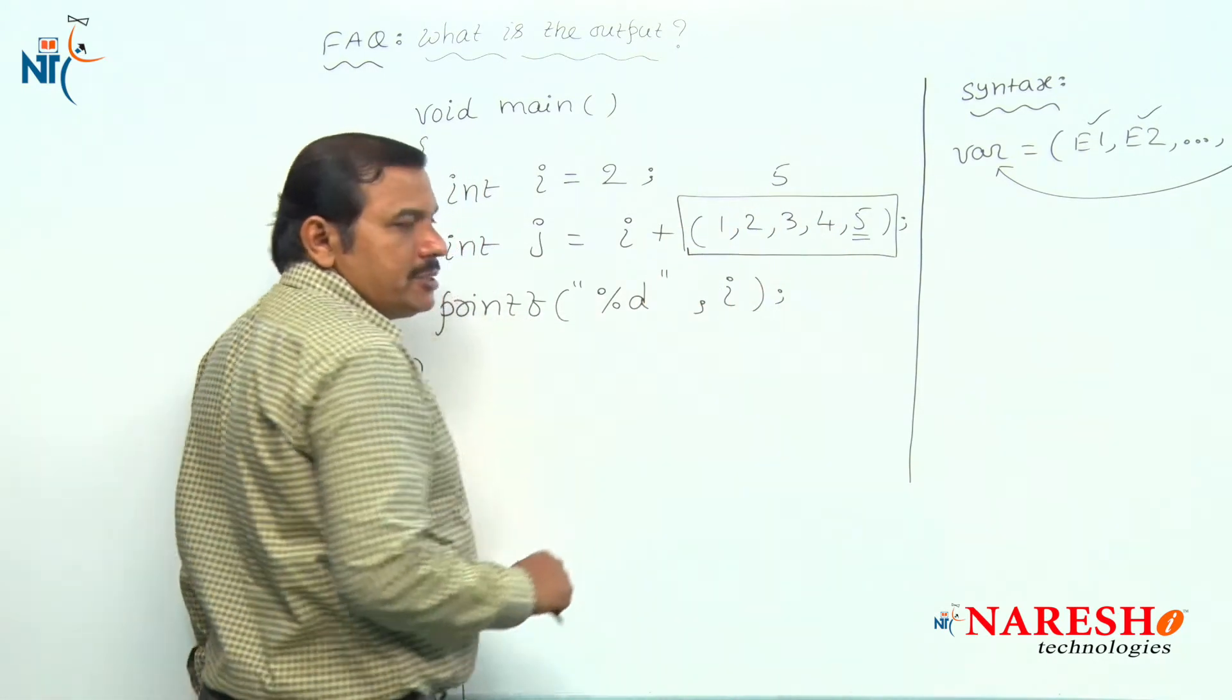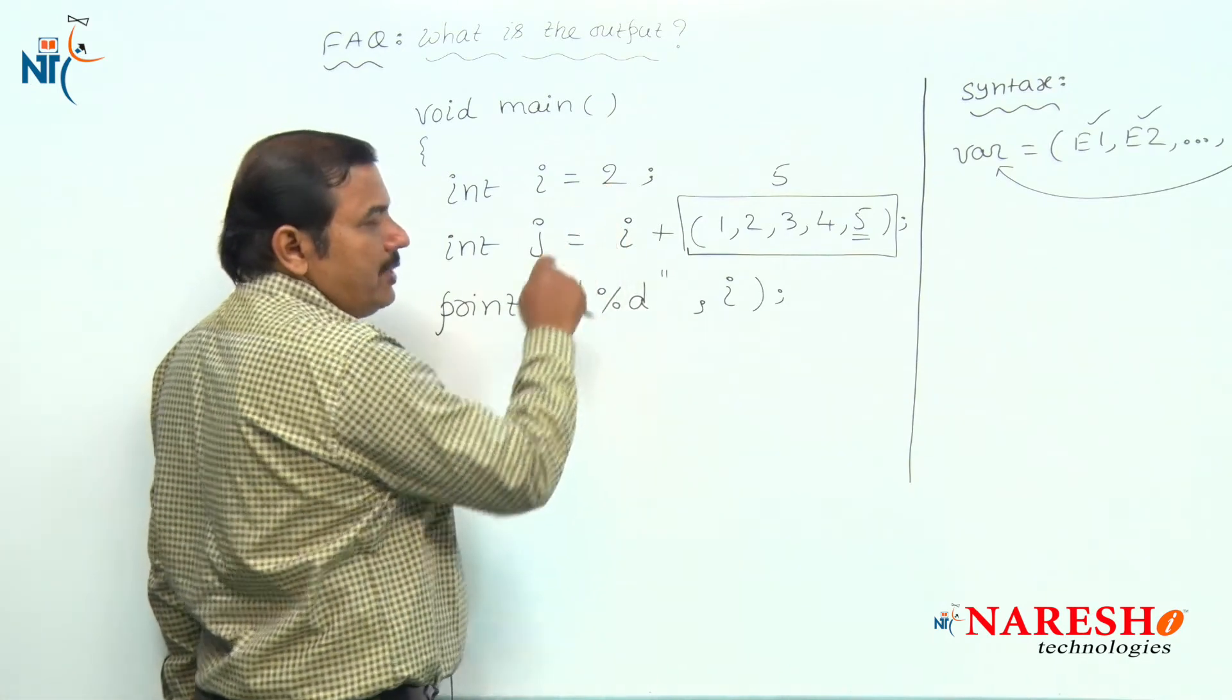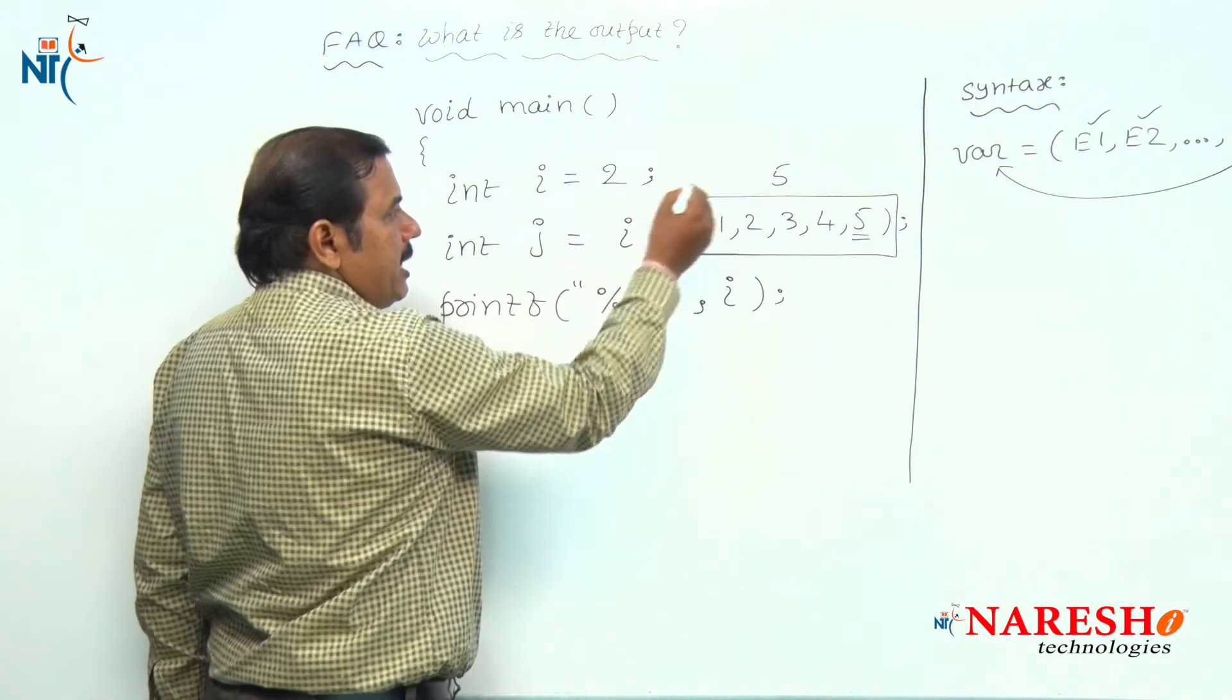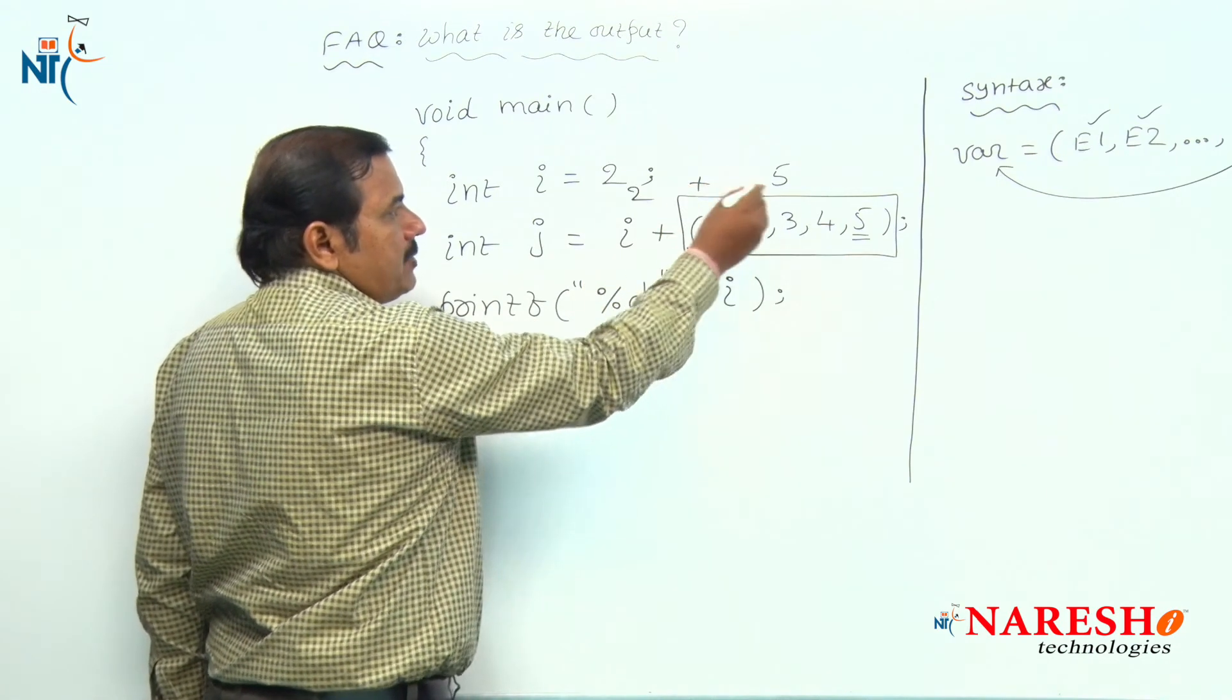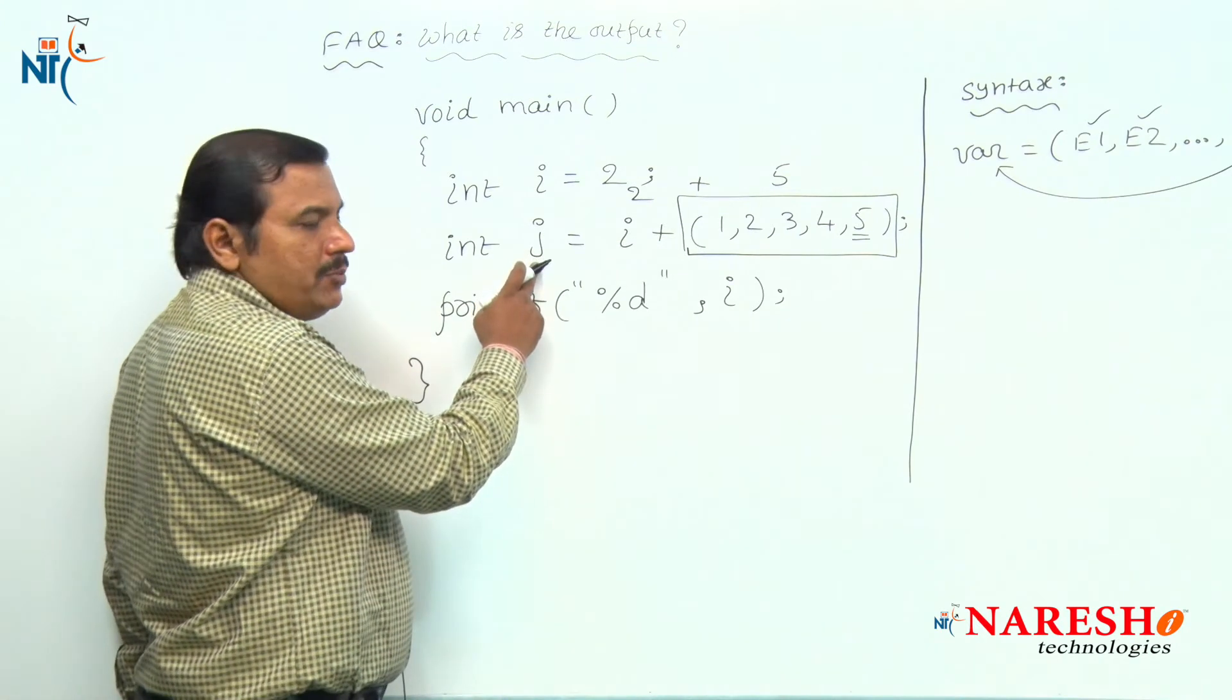The result of this part is 5, and here the value of i given is 2. To this i value, 5 is added. 2 plus 5 is 7, and the value 7 is assigned to this variable j.